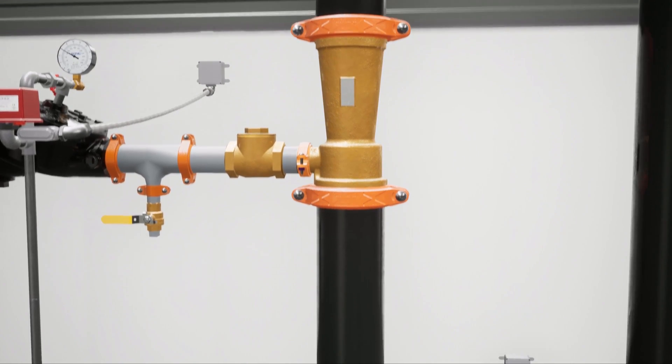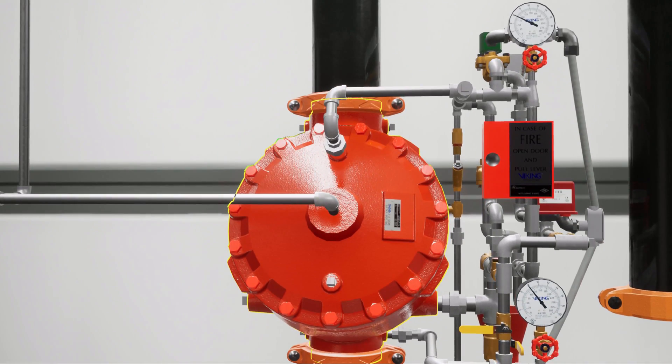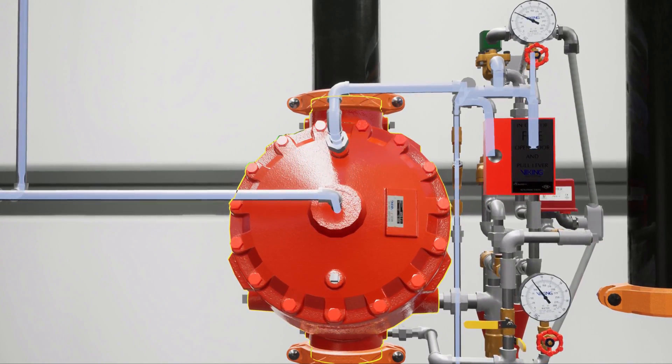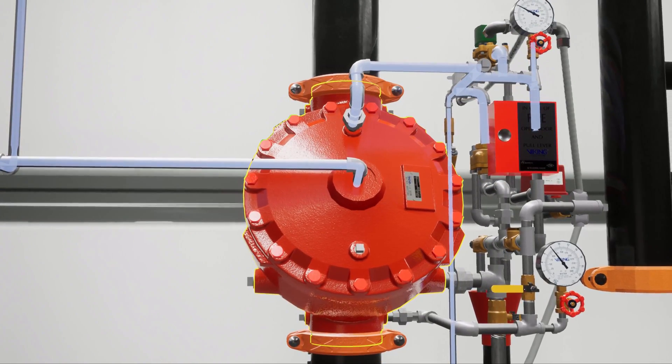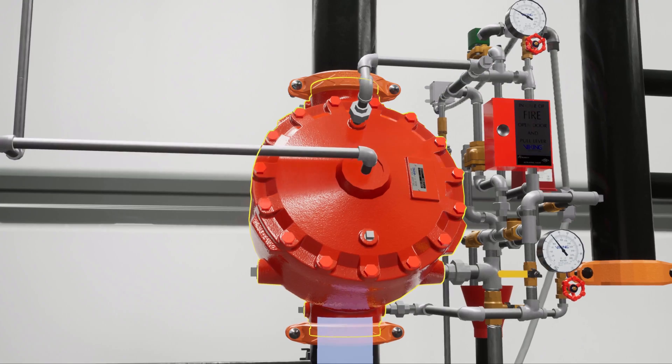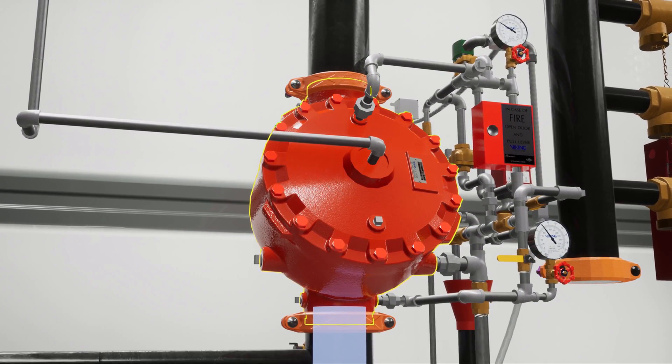Upstream from the ratio control valve is the F1 deluge valve, which has a shared priming connection with the concentrate control valve. This allows the two valves to activate simultaneously. The deluge valve is holding back the main water supply until the system is activated.